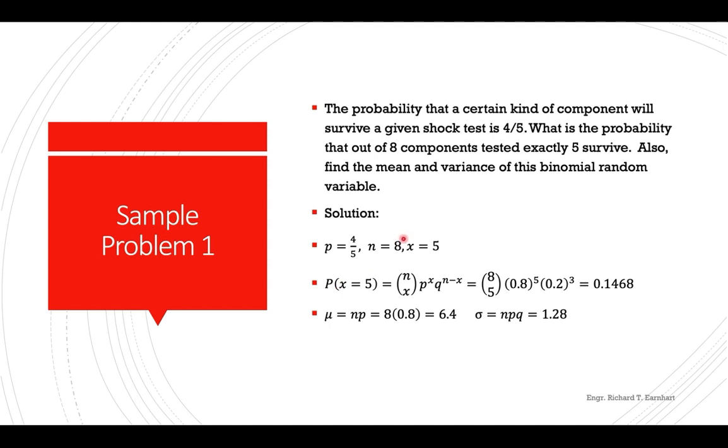So your n here, the total number of eight components, is eight. That is your total number of trials. And then your random variable X is five, so you're asked for the probability that X is equal to five.